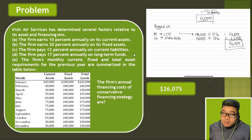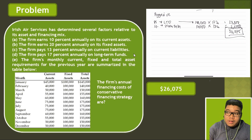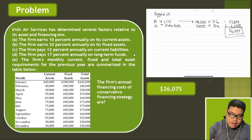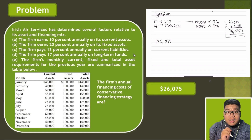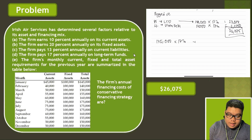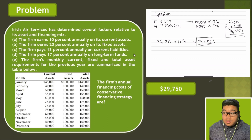Now if we use a conservative financing strategy, both permanent and seasonal funding are financed by long-term funds. In doing this, we need to consider the peak requirement in any given month, which is 175,000. So the entire 175,000 would be loaned at the onset using long-term debt, multiplied by 17%, giving us 29,750 as the financing cost under the conservative strategy.